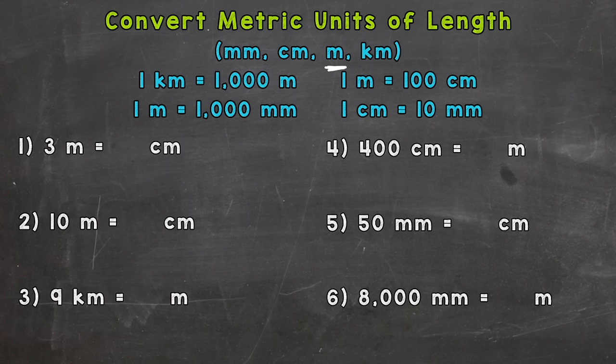For example, millimeter — the prefix milli means one one-thousandth of a meter, so it takes a thousand millimeters to equal one meter. Centimeter — the prefix centi means one one-hundredth of a meter, so it takes a hundred centimeters to equal one meter.